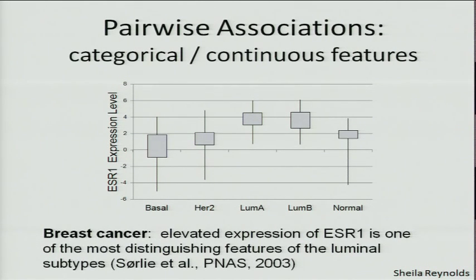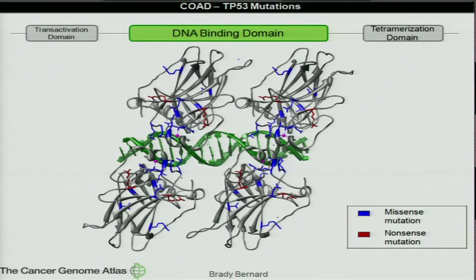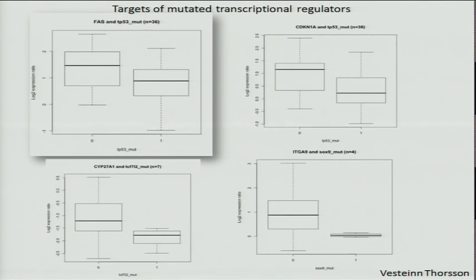Another example is the expression level of ESR1 in breast cancer, which is associated with different subtypes. Elevated expression of ESR1 is one of the most distinguishing features of the luminal subtype. For P53, most mutations occur in the DNA binding domain, and samples where P53 is mutated there exhibit lower expression levels of its downstream targets — evidence that a mutation in the DNA binding domain affects downstream target expression.